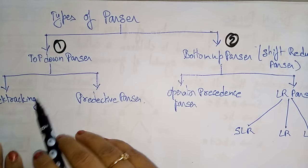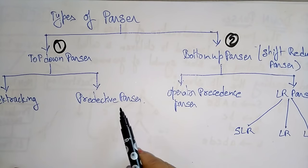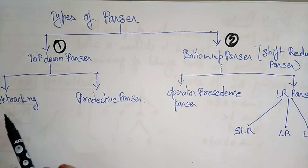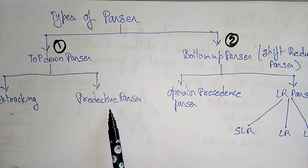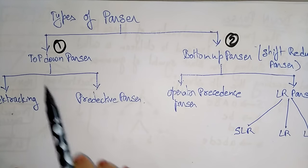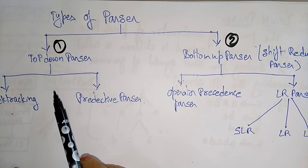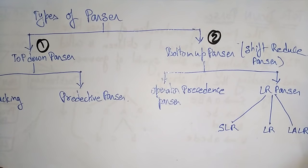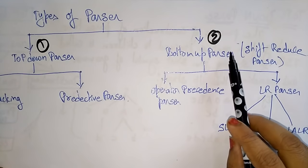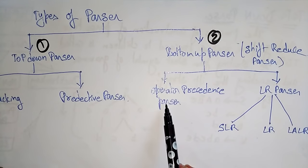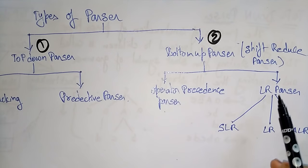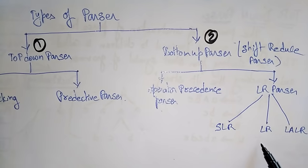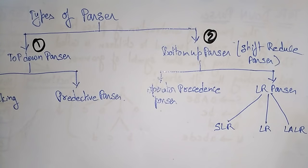Top-down parsers are of two types: one is backtracking and another is a predictive parser. Bottom-up parsers are also called shift-reduce parsers, and they are of two types: operator precedence parser and LR parser. The LR parser itself has different variants — SLR, LR, LALR, and CLR.